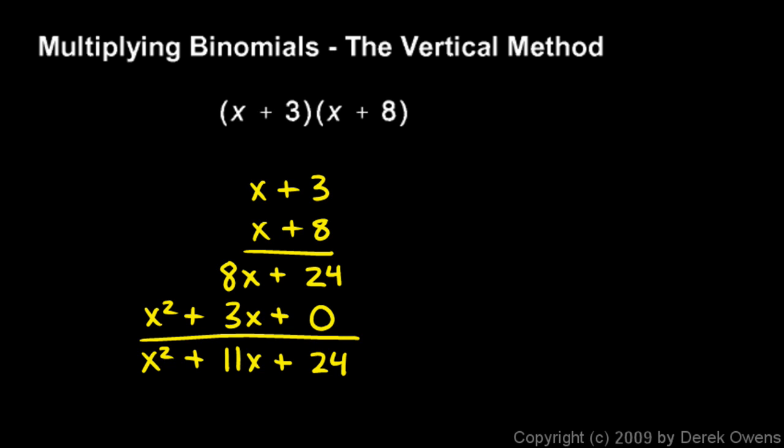Now once again, the main idea in multiplying binomials is that each term in one binomial gets multiplied by each term in the other, and the vertical method is just another way to systematically accomplish that.